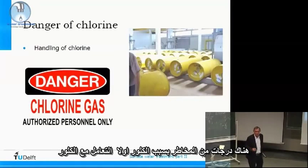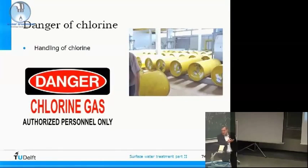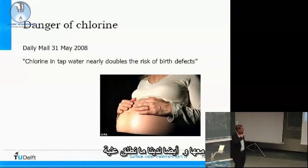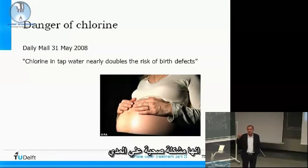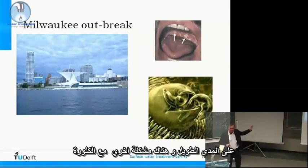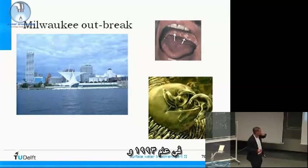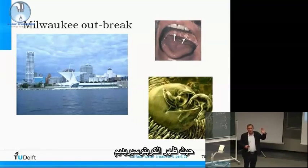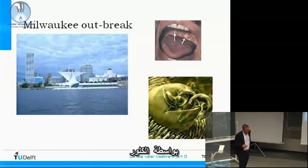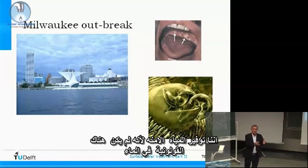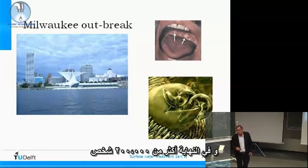But there are also some dangers with chlorine. First of all, there is the handling, because these are types of compounds that are stored. It is also a problem for health in the long run. Another problem with chlorination is the situation in Milwaukee in 1993, where cryptosporidium occurred and was not disinfected by chlorine because it was resistant. We thought we had safe water because there were no E. coli, but more than 200,000 people got ill.